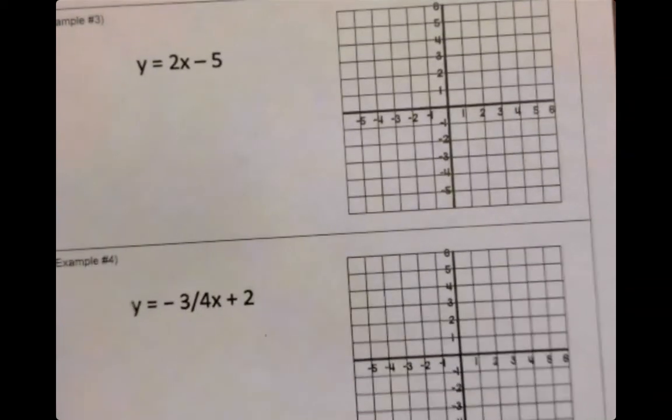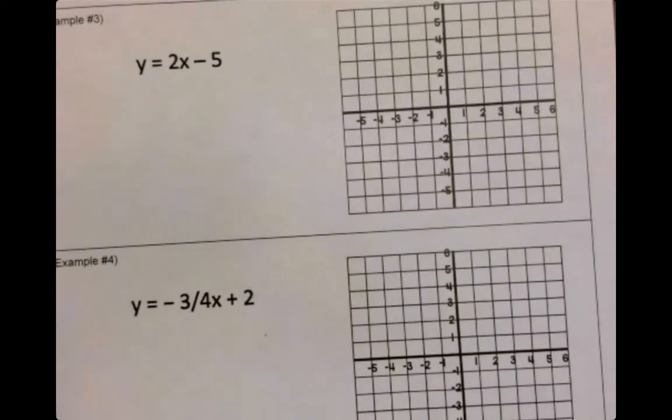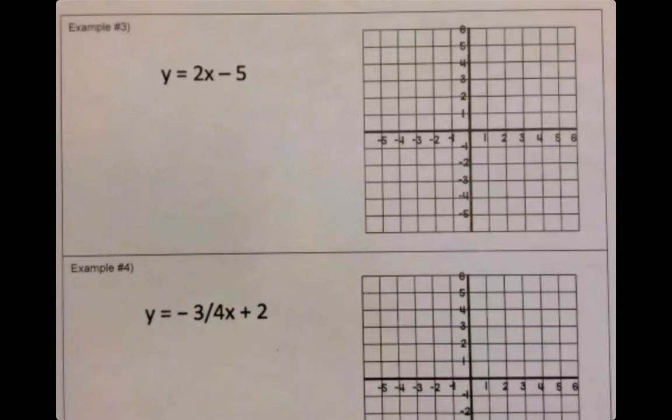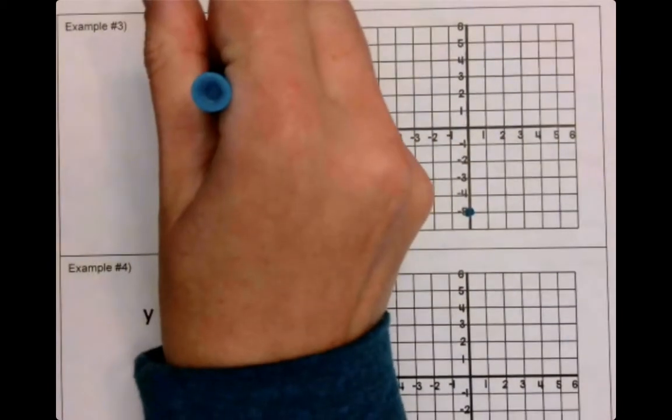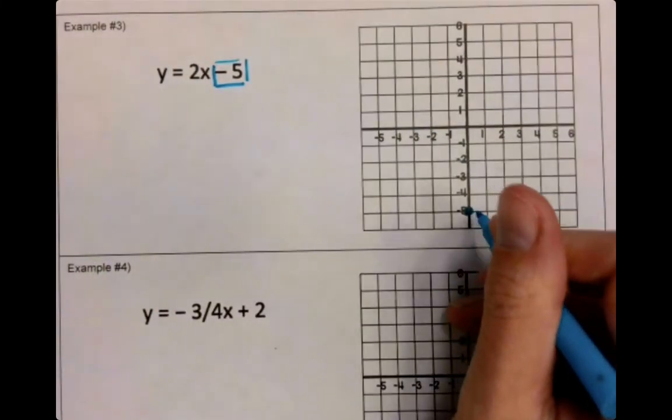So if we do the same thing, why don't you take a minute, see if you can plot that b, and then we'll talk about our slope, our m. So you should have plotted our b at negative 5, right? This is a negative 5, so it should have been down here.